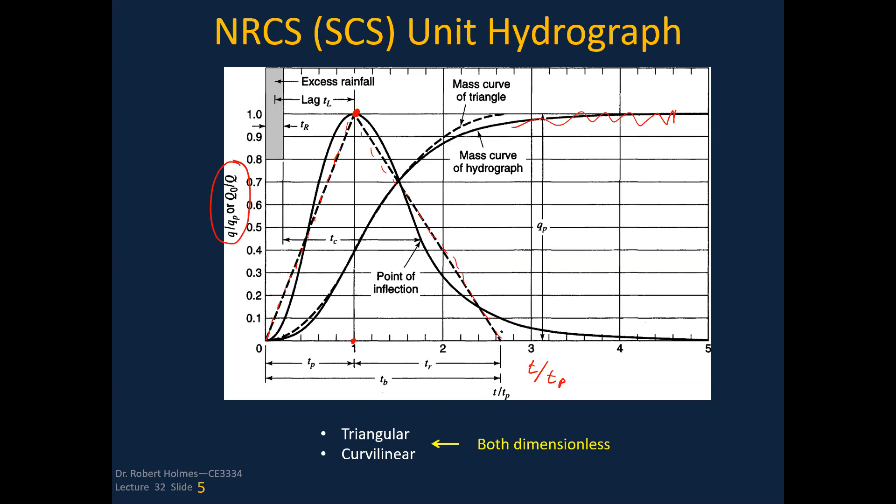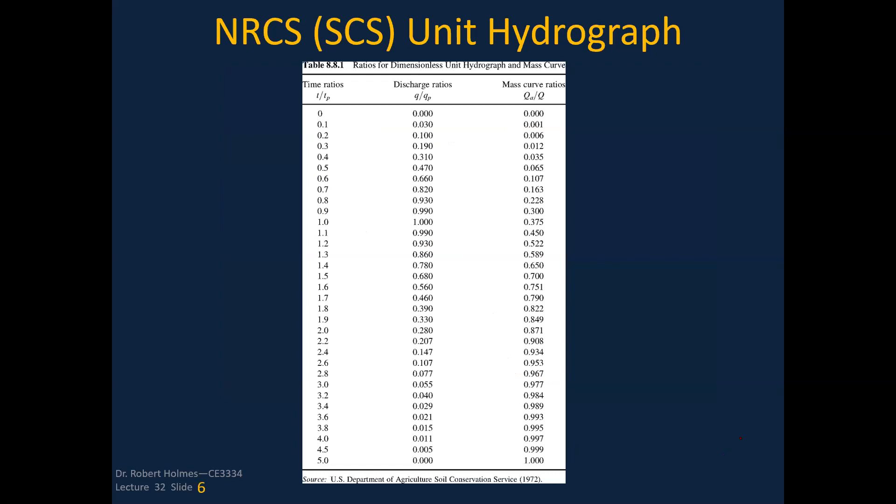If we've got the triangular, there's some equations for that. This is 2.67 is the maximum, starts out at zero, and then you've got a value for t over t_p. From those three points, you can lay out that triangular unit hydrograph. If it's curvilinear, you have to go to a table and pick out these values. You'll notice it goes all the way to five times the time to peak. This is the table for the curvilinear values. You can ignore the cumulative and just pay attention to these first two columns. You've got t over t_p all the way up to the peak here at one, and then it goes to five.